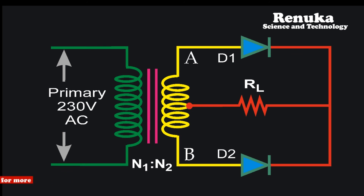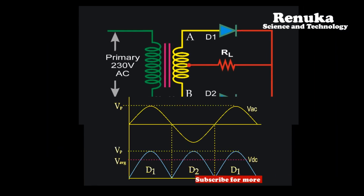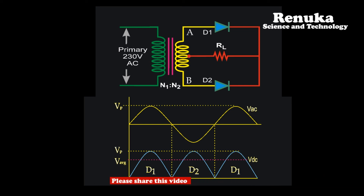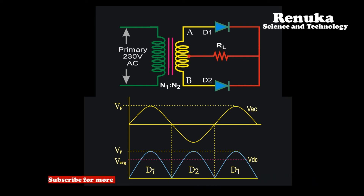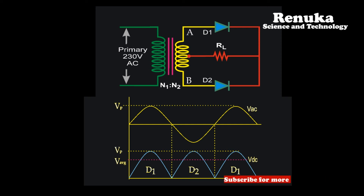This circuit works like two back-to-back half wave rectifiers. Suppose the upper coil terminal is point A. During the positive half cycle of the secondary AC voltage, point A is positive with respect to point B, so diode D1 is forward biased. Since point B is negative with respect to point A, diode D2 is reverse biased. Therefore, current flows through diode D1 and load resistance RL, and the positive half cycle appears at the output.